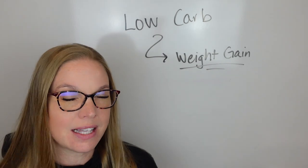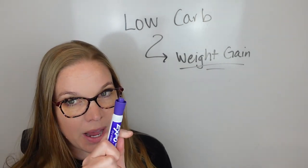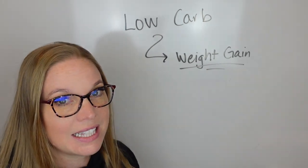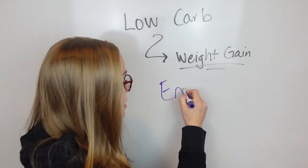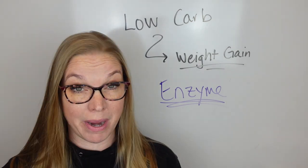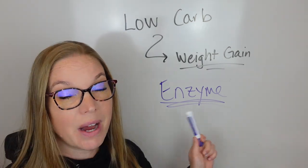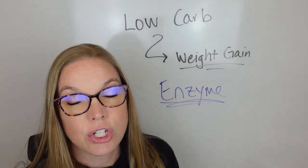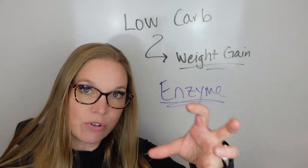There's a few things that happen with the body, especially the female body. One of the things is enzyme, especially for women who are in perimenopause and menopause, your body actually loses the ability to break down carbohydrate properly.